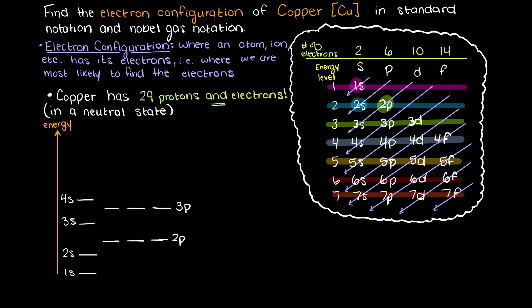So, since we have 29 electrons to place, we always begin with 1s, and as we discussed before, s subshells can hold 2 electrons. So that leaves us with 27 electrons.